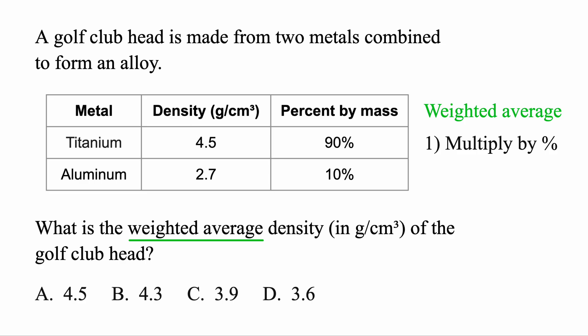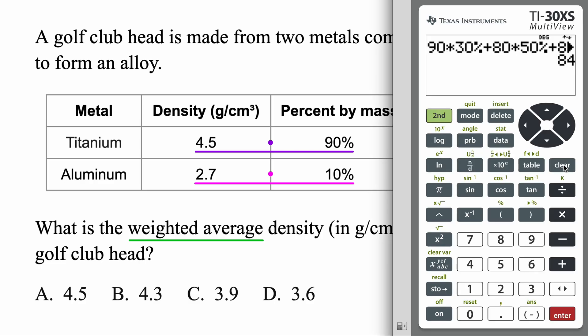So we'll multiply 4.5, that shows up 90% of the time, multiply those two. 2.7, that density shows up 10% of the time. And finally, we're just going to add these together. So once again, let's go ahead and use the calculator. Let's type it all in here. We've got 4.5, that shows up 90% of the time. And then plus 2.7, that shows up 10%. And this time, we're only adding those two together. So hitting enter here, 4.32.